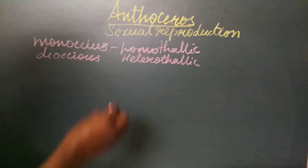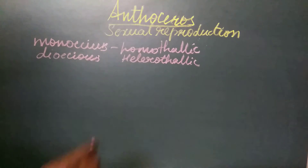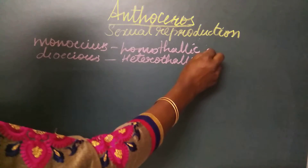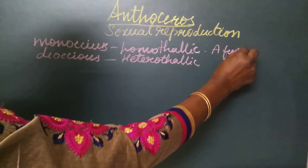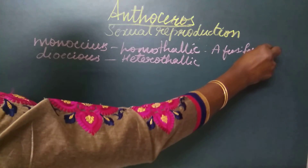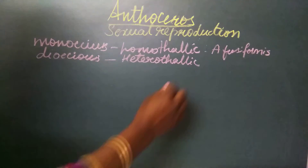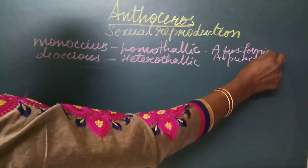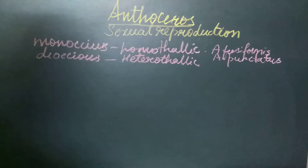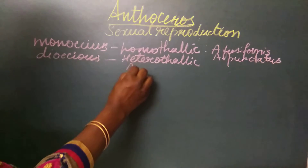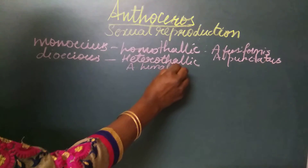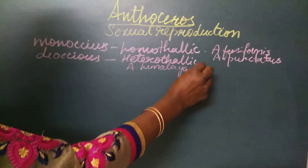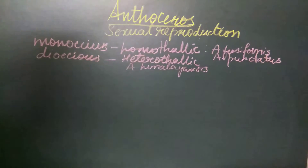In homothalic species, both the male and the female sex organs are seen on the same thallus, whereas in heterothalic species the male and female sex organs are found on different thalli. Some examples of homothalic species are Anthoceros fusiformis and Anthoceros punctatus. The heterothalic species are Anthoceros himalayensis and Anthoceros halic.